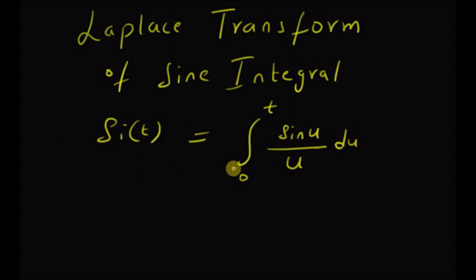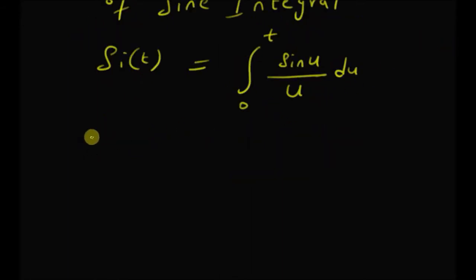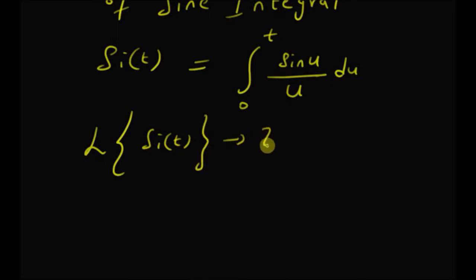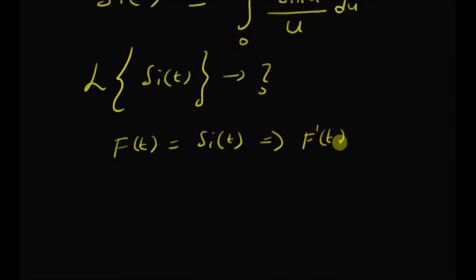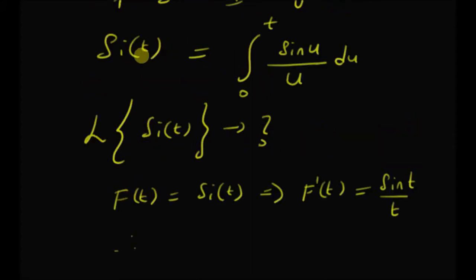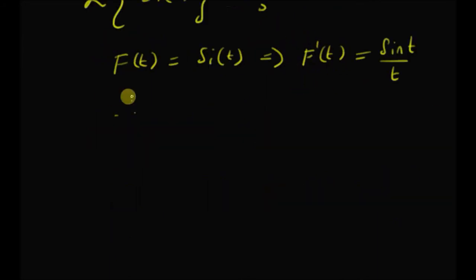Now we want to find the Laplace transform of this function, that is, we want to find the Laplace transform of SI of t. Let us denote f of t as the sine integral SI of t. That implies f dash of t is equal to sine t by t, because the derivative of this function is clearly equal to sine t by t. Therefore, by simply multiplying with t on both sides of this equation, we have t times f dash of t is equal to sine of t.